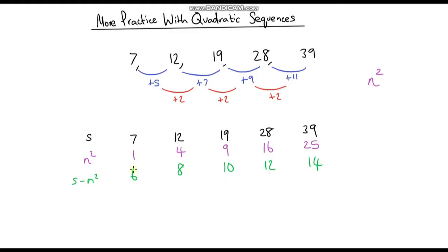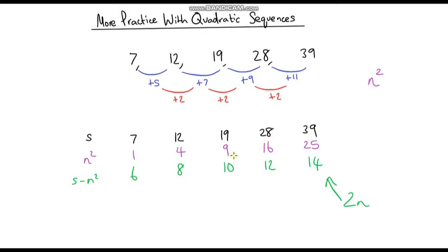What we're left with after subtracting our n squared sequence from our original sequence is just another sequence: 6, 8, 10, 12, 14. That's an arithmetic sequence because it goes up by the same amount each time — we're adding 2 each time. So this sequence has an nth term of 2n, and we're just shifting our 2 times table up by 4 each time. So it has the nth term 2n plus 4.